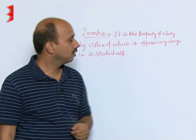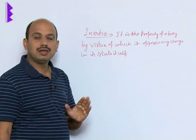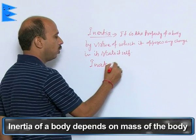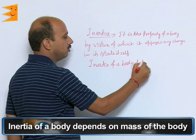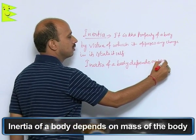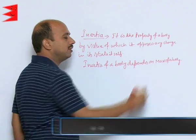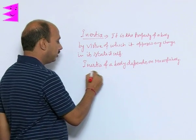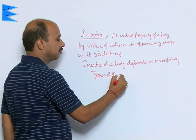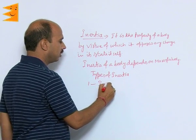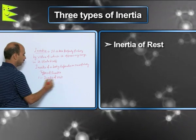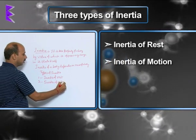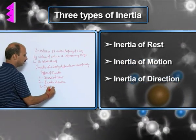We can categorize inertia in three ways. Inertia is basically a property that depends on the mass of the body — larger the mass, larger the inertia. There are three types of inertia: first, inertia of rest; second, inertia of motion; and third, inertia of direction.